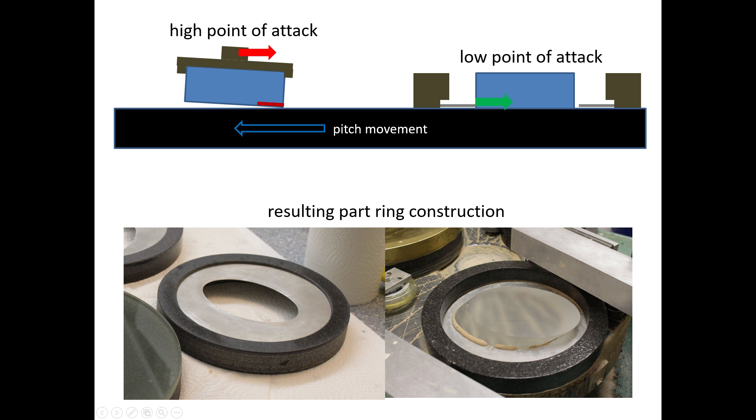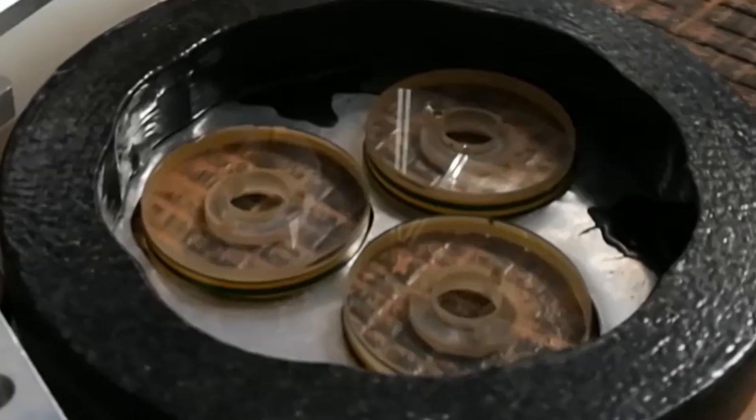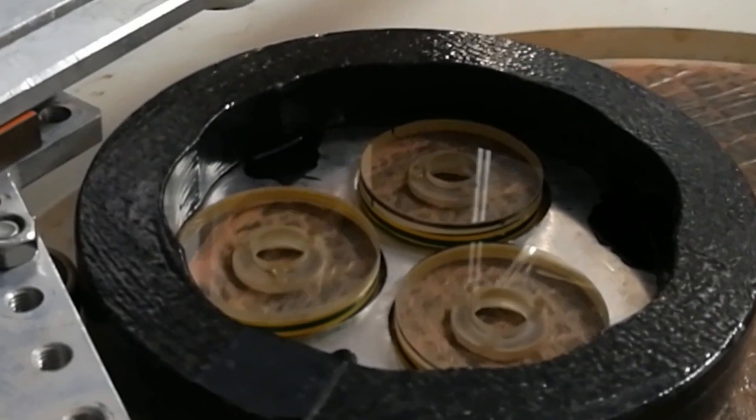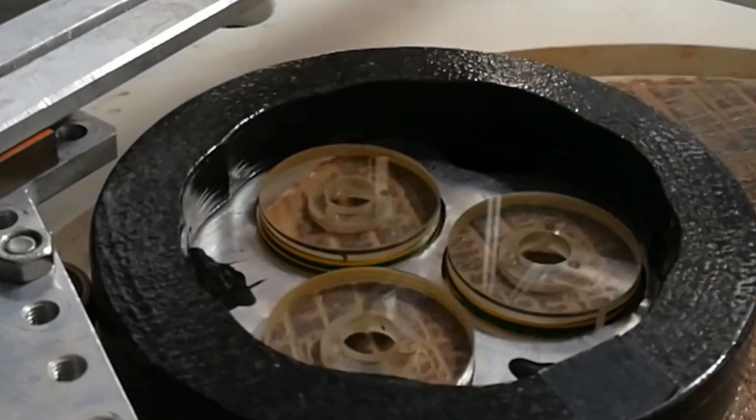Another condition required for good flatness is to use a low point of attack on the objects. If we hold the objects too high, they want to rotate under the frictional forces acting on the surface and the local pressure at the edge will also influence flatness in a negative way. This is the reason why objects are pushed over the surface at a point very close to the pitch surface.